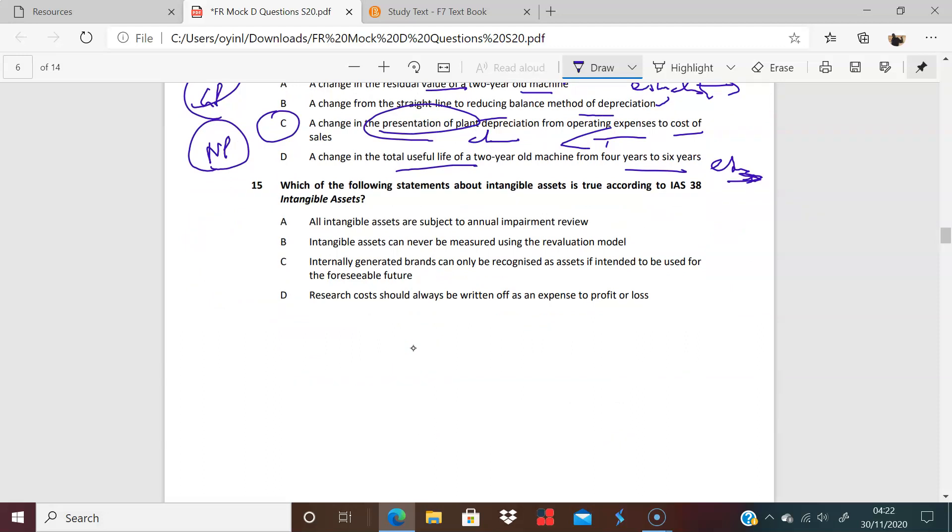Intangibles, IAS 38. All intangibles are subject to annual impairment review. No, not quite. I mean, it's a good thing, but it's not the case. Intangibles can never be measured. No, that's not true. Probably you can, depending on the intangible. So you're looking at the fair value. It's really about what's relevant. If it's relevant to use a valuation model, then do so. We don't recognize internally generated brands. We just don't because of the problem with faithful representation. Well, faithful representation and measurement uncertainty. We don't quite, even though it's relevant, we tick the box of relevance. We fall on measurement uncertainty. It's subjective. It's very subjective. And then research costs should always be written off. Yes, that's correct. So the answer here is D. So that's 11 to 15. So that's okay. Thank you.